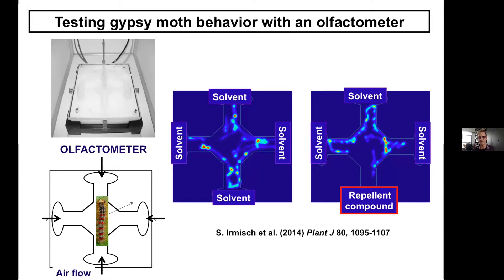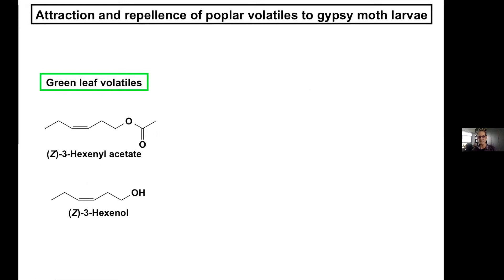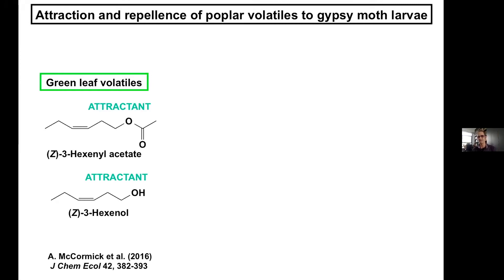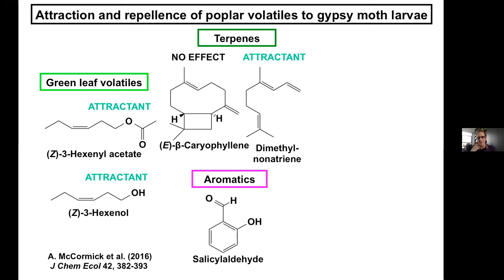She also looked at terpenes — an area long favored — but unfortunately they were not that exciting in this study; some had no effect and some were attractants. Aromatics were another major group, and one compound in particular — salicylaldehyde and benzaldehyde — were strong repellents of the larvae in the volatile blend. The most interesting compounds were nitrogen-containing ones, including an aldoxine and a nitrile called benzalcyanide, which had never been reported from poplar before.